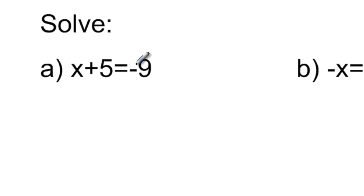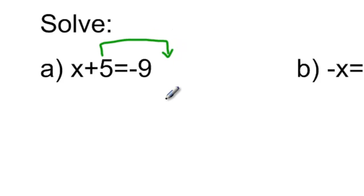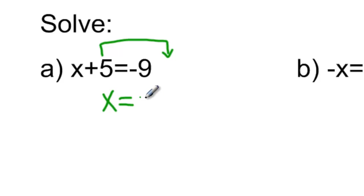My first example: x plus 5 equals negative 9. Here we need to isolate the variable x on one side of the equal sign, which means we need to pick up that positive 5 term and move it to the other side of the equal sign. And when we move that positive 5 to the other side of the equal sign, it changes to its opposite.